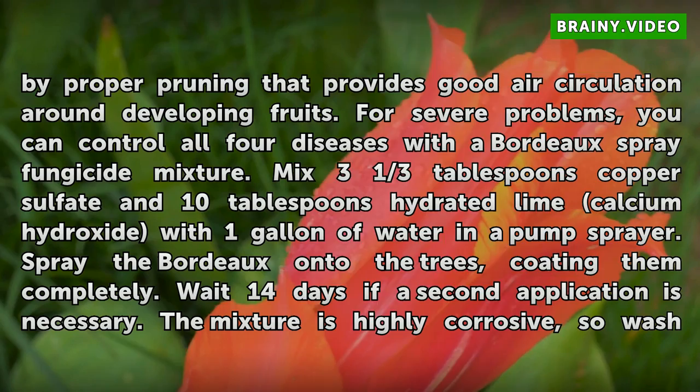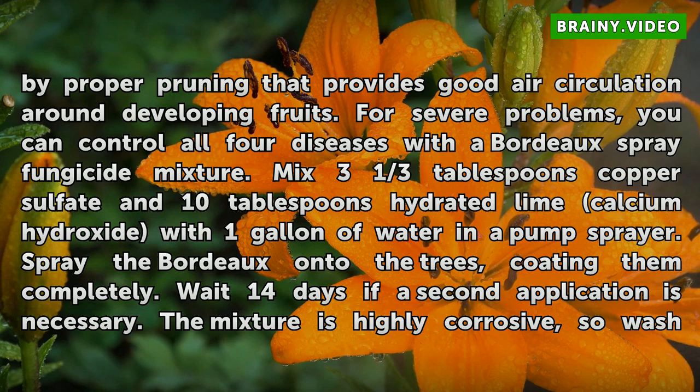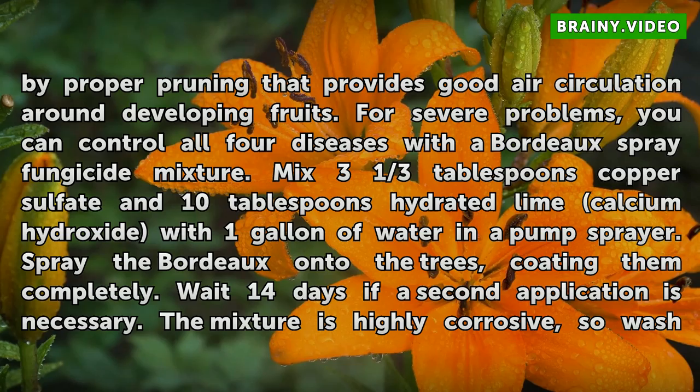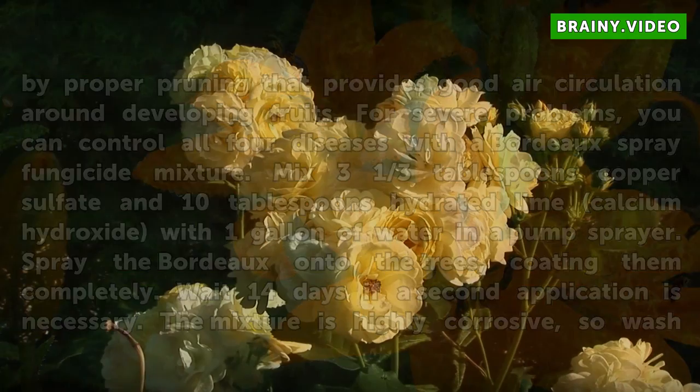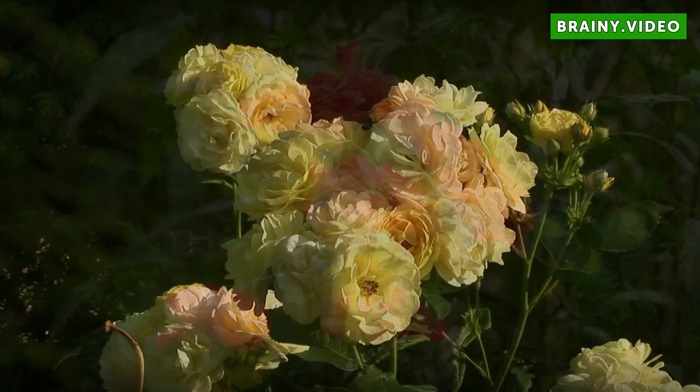Flyspeck, Sooty Blotch and Brook's Disease are best controlled by proper pruning that provides good air circulation around developing fruits. For severe problems, you can control all four diseases with the Bordeaux spray fungicide mixture. Mix 3 and 1/3 tablespoons copper sulfate and 10 tablespoons hydrated lime (calcium hydroxide) with 1 gallon of water in a pump sprayer. Spray the Bordeaux onto the trees, coating them completely. Wait 14 days if a second application is necessary. The mixture is highly corrosive, so wash spray equipment thoroughly after use, and wear gloves, eye protection and a face mask when mixing and applying the fungicide.